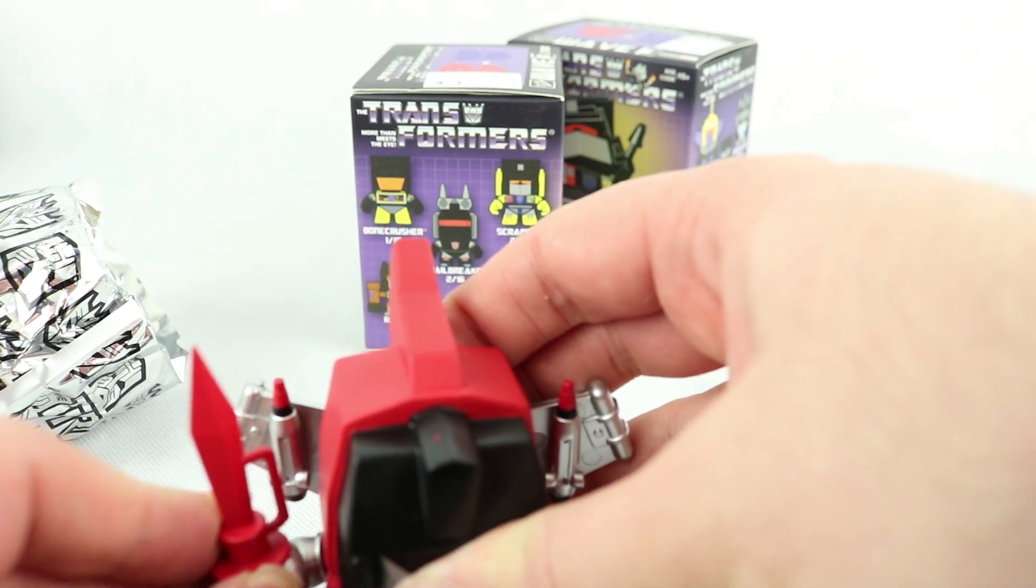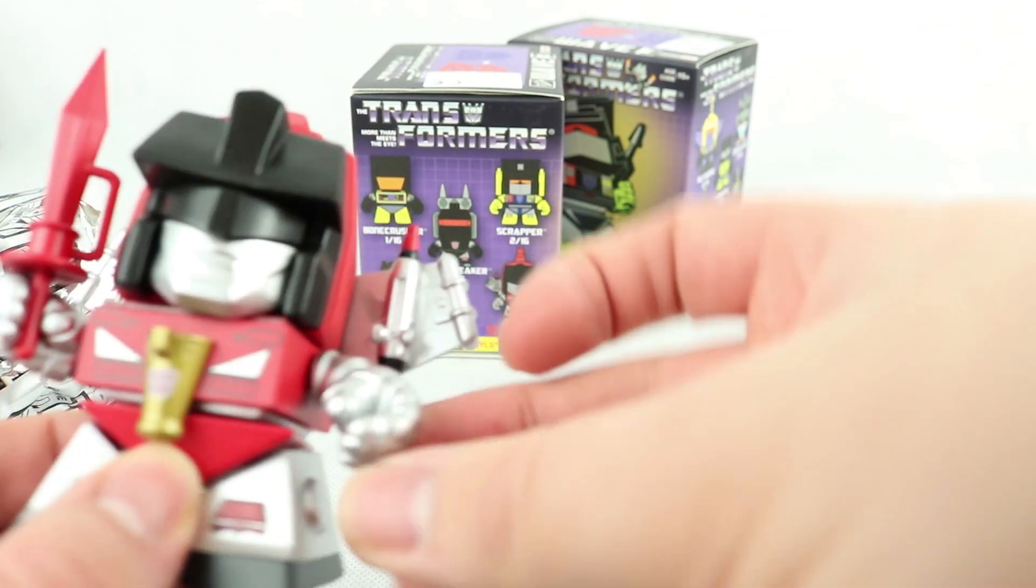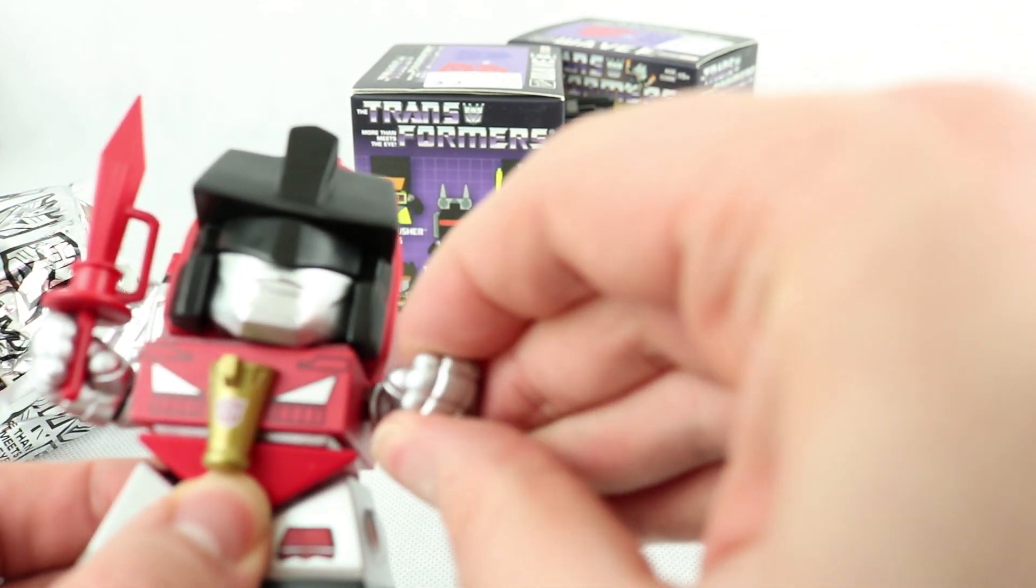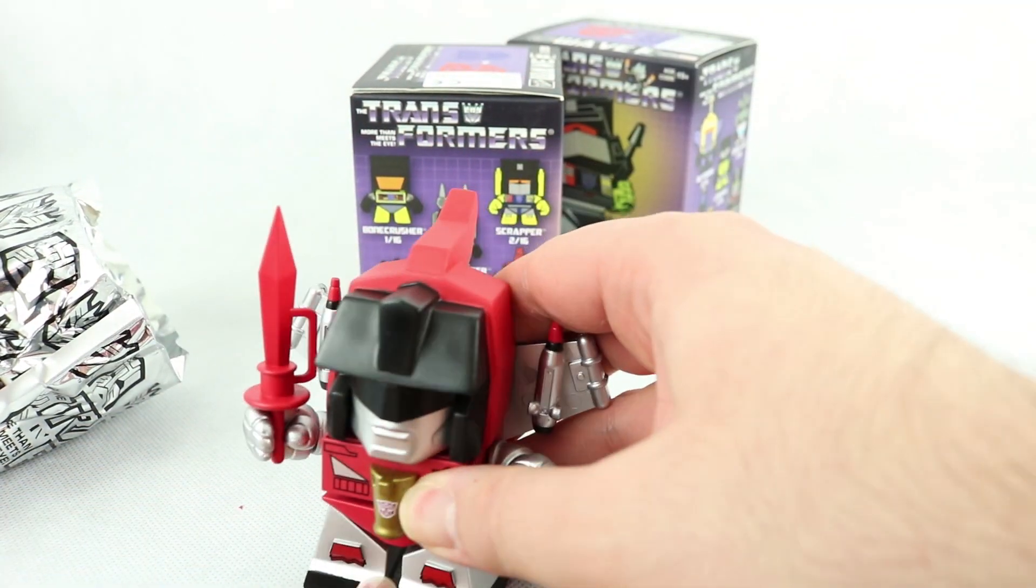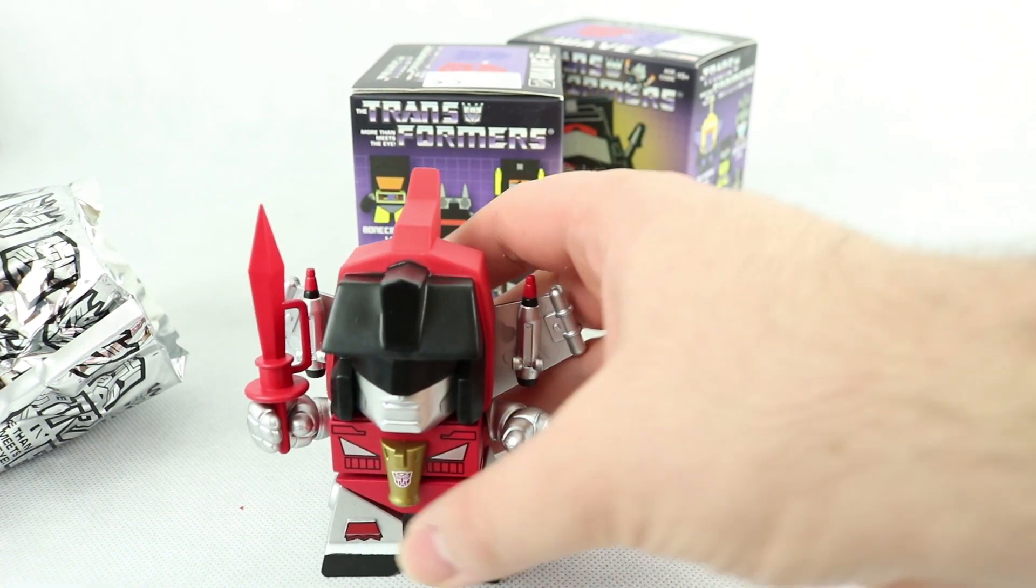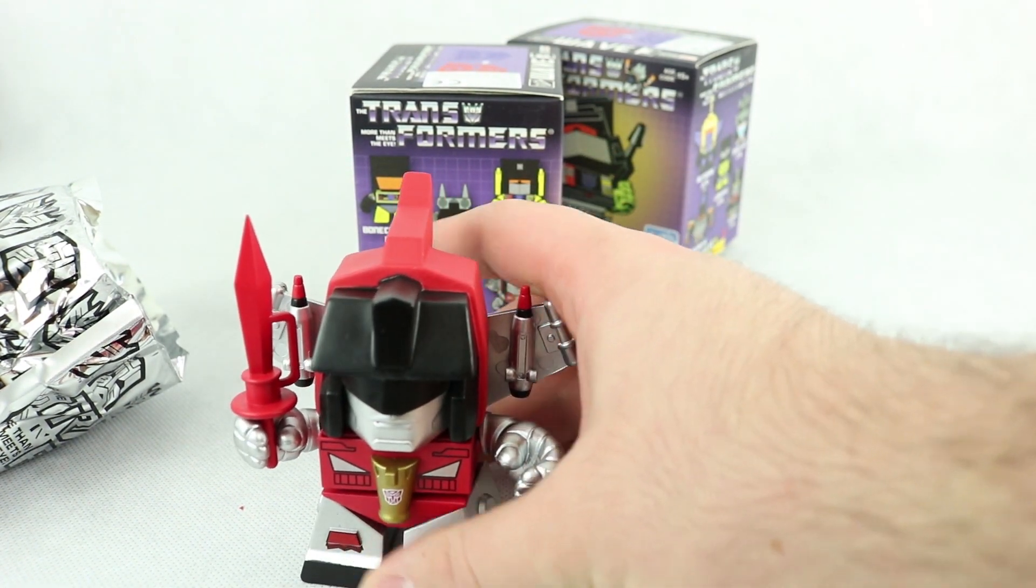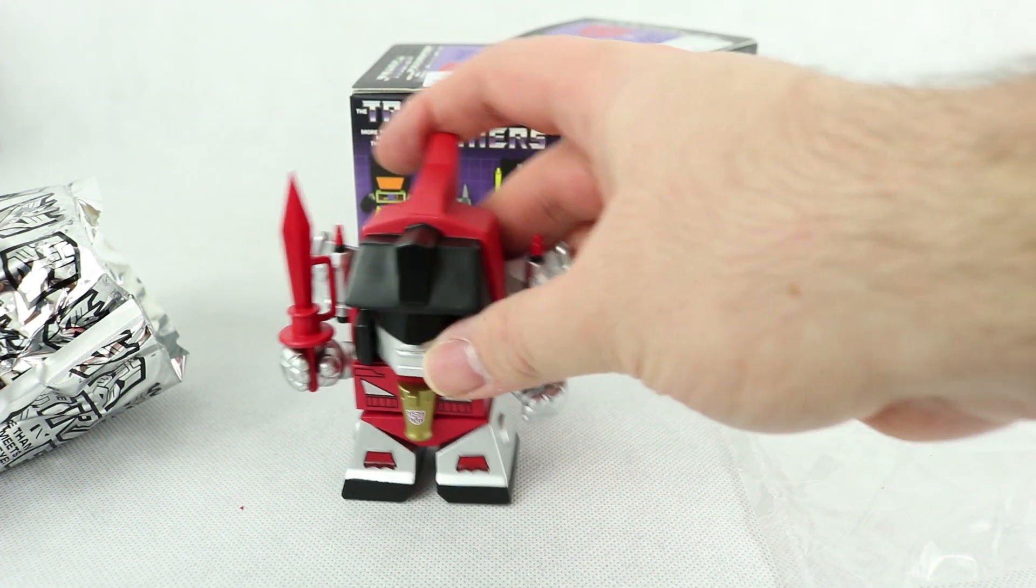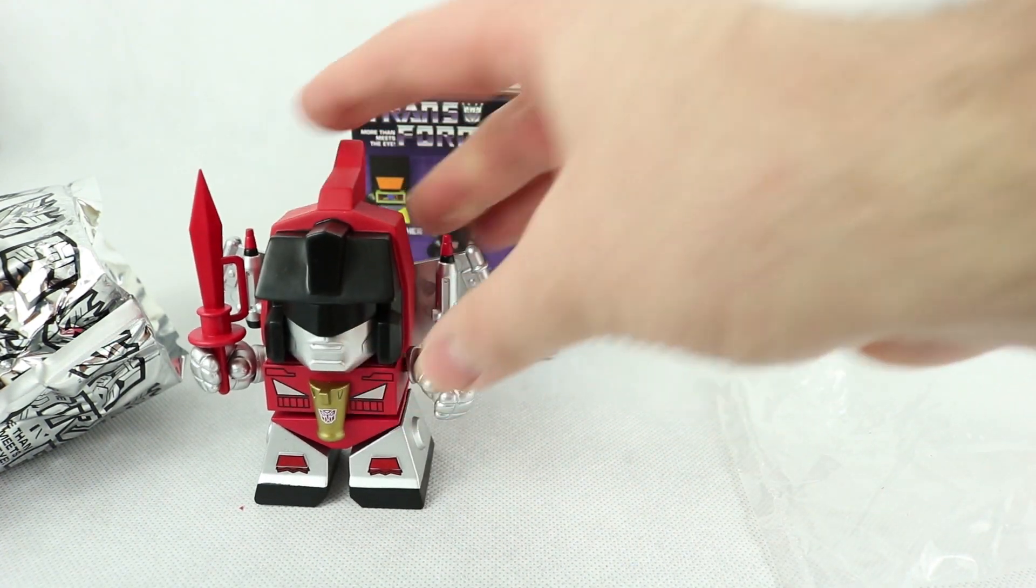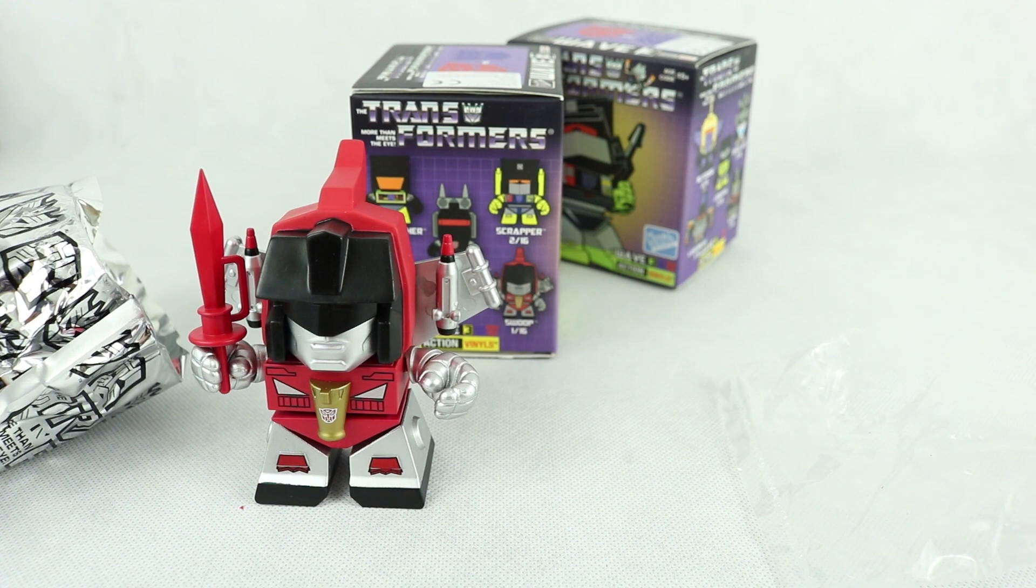But obviously due to the blocky nature of the figures it's tricky to do too much with it. Yeah the head moves around you can even move the legs as well. So they are kind of a bit like the Mighty Muggs except smaller and more poseable. And again I mean the classic Mighty Muggs not the new ones that have come out with the spinning heads stupid stuff. They're terrible.